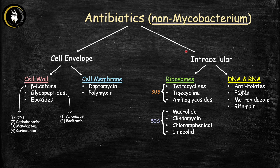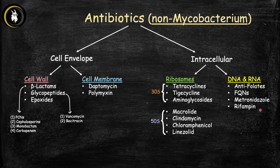A couple of final points: these antibiotics are non-mycobacterial — they're not effective against mycobacterium. Mycobacterium (which causes tuberculosis and leprosy) is completely different from mycoplasma (walking pneumonia). Mycobacterium is highly resistant and most of these antibiotics have no effect on it. The only drug from everything discussed that works against mycobacterium is rifampin. For mycobacterium, there's a separate regimen called RIPE therapy — rifampin, isoniazid, and other drugs — which will be covered in a separate video.